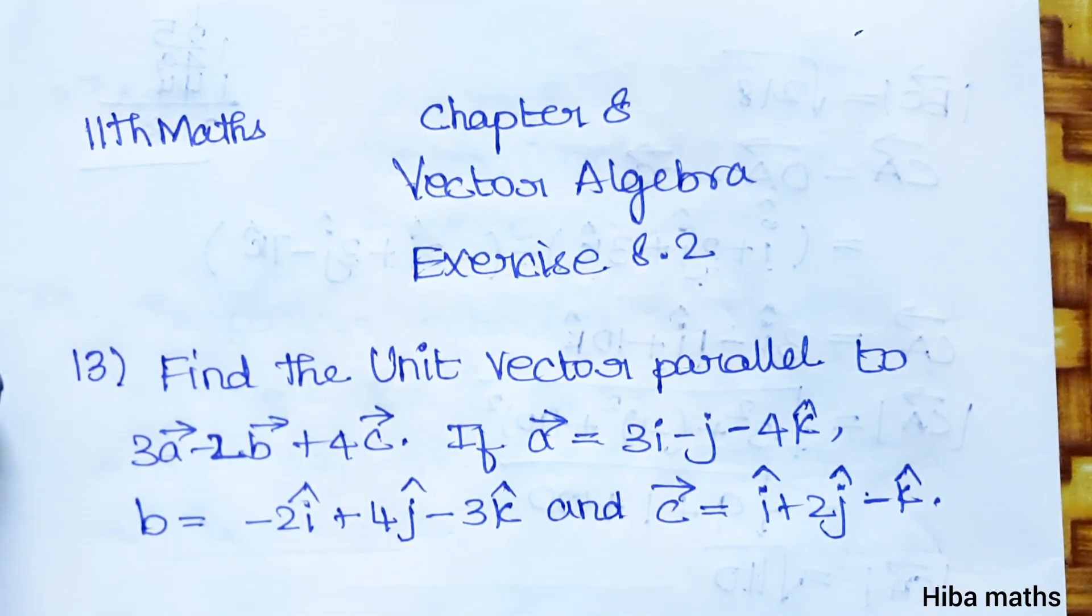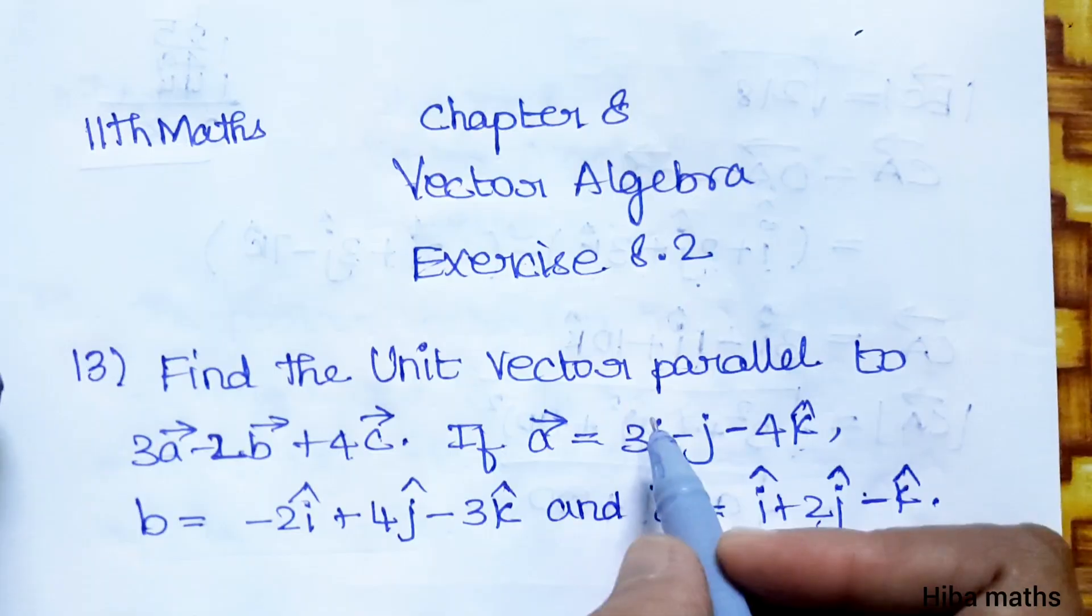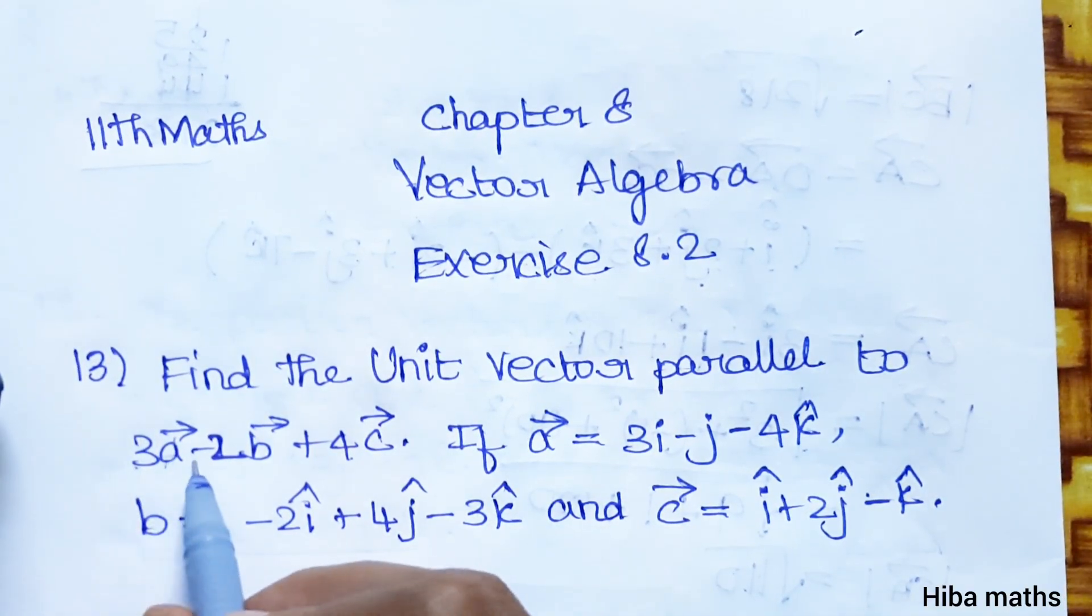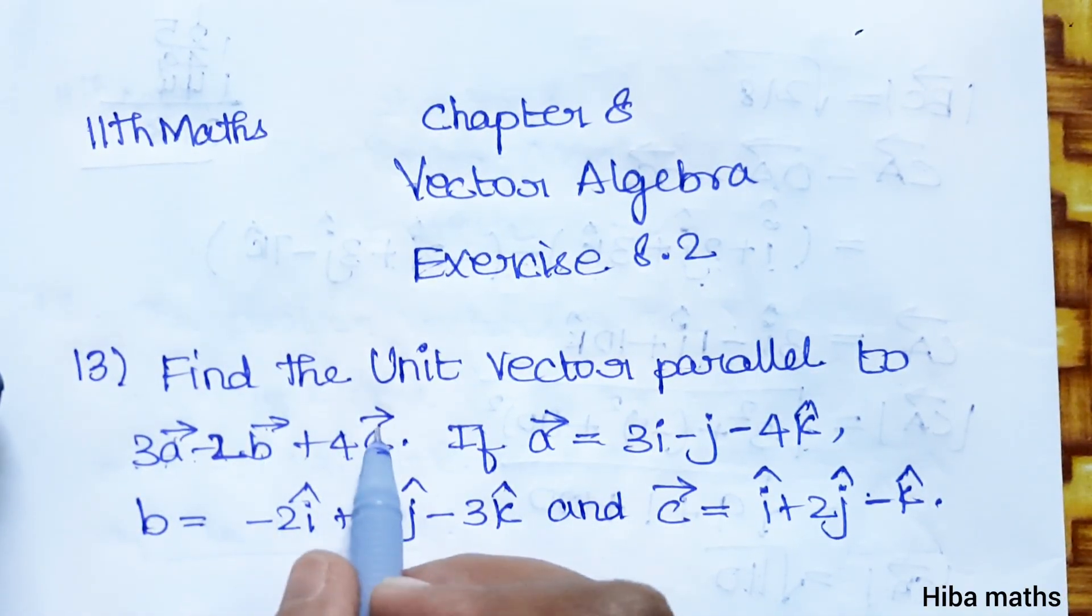We will solve it in the video. Find the unit vector parallel to 3A vector minus 2B vector plus 4C vector.